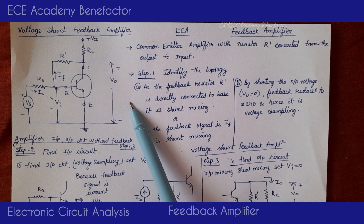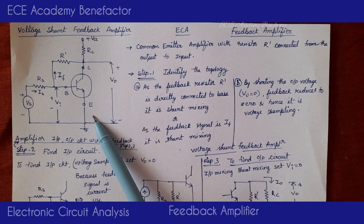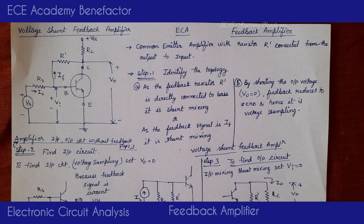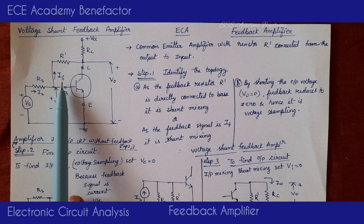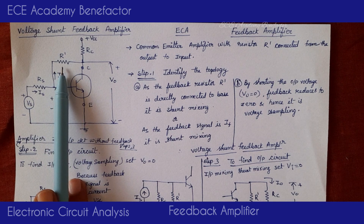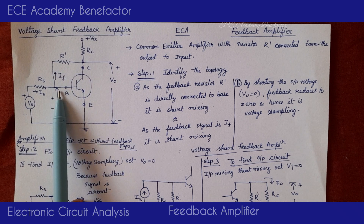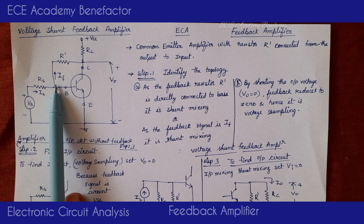Step 1: Identifying the topology. For identifying, we need to know what mixing is done and what sampling is done. Mixing is done at the input side and sampling is done at the output side. By visualization, we can easily tell the feedback resistor R' is connected directly to the base of the transistor, so it is shunt mixing.